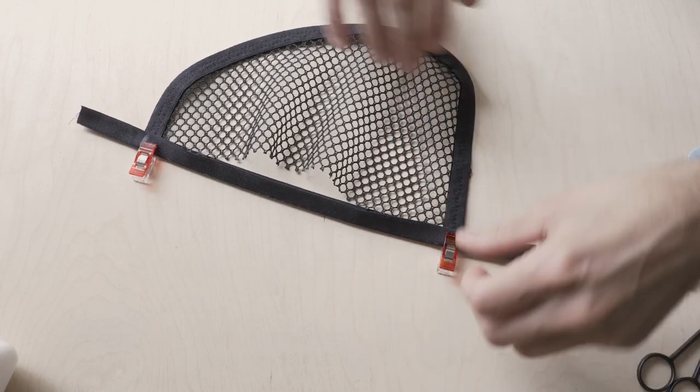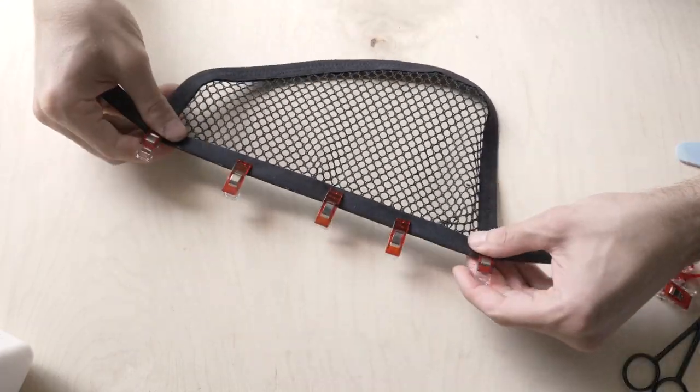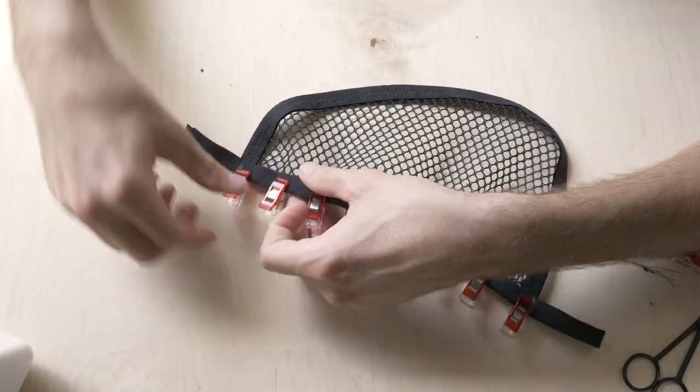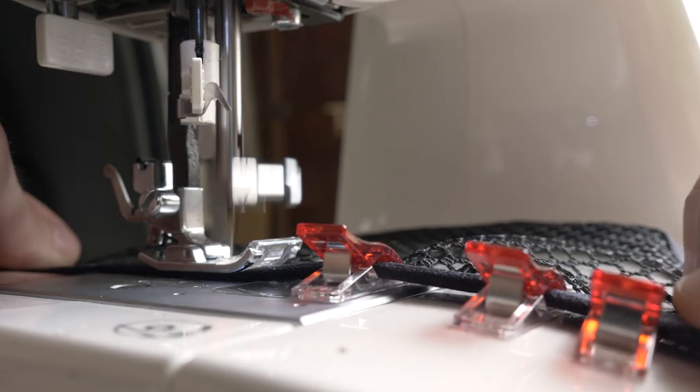To finish off the pouch, I clipped both ends of the top edging in place, then the middle, then stretched and clipped until it seemed right, and sewed that on, making sure to keep tension on the elastic as I fed it through.